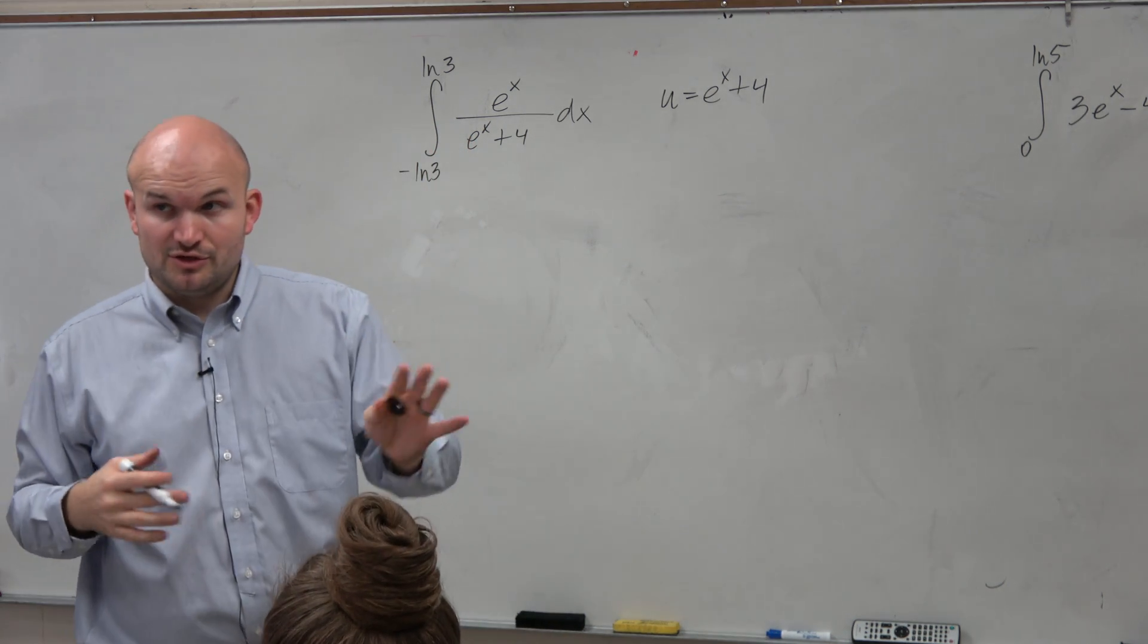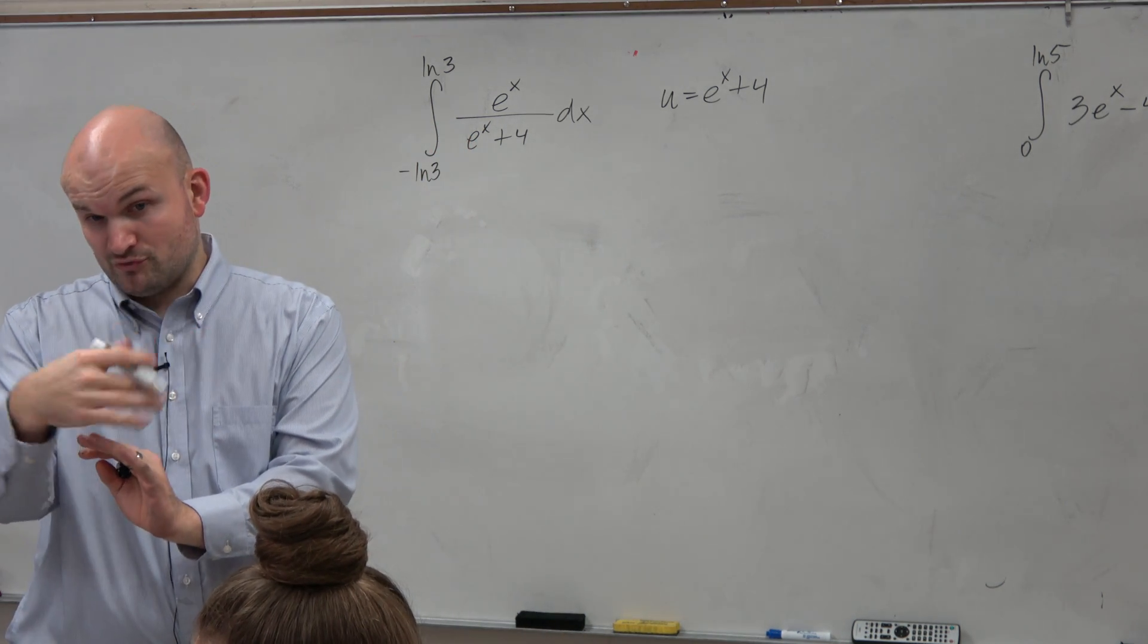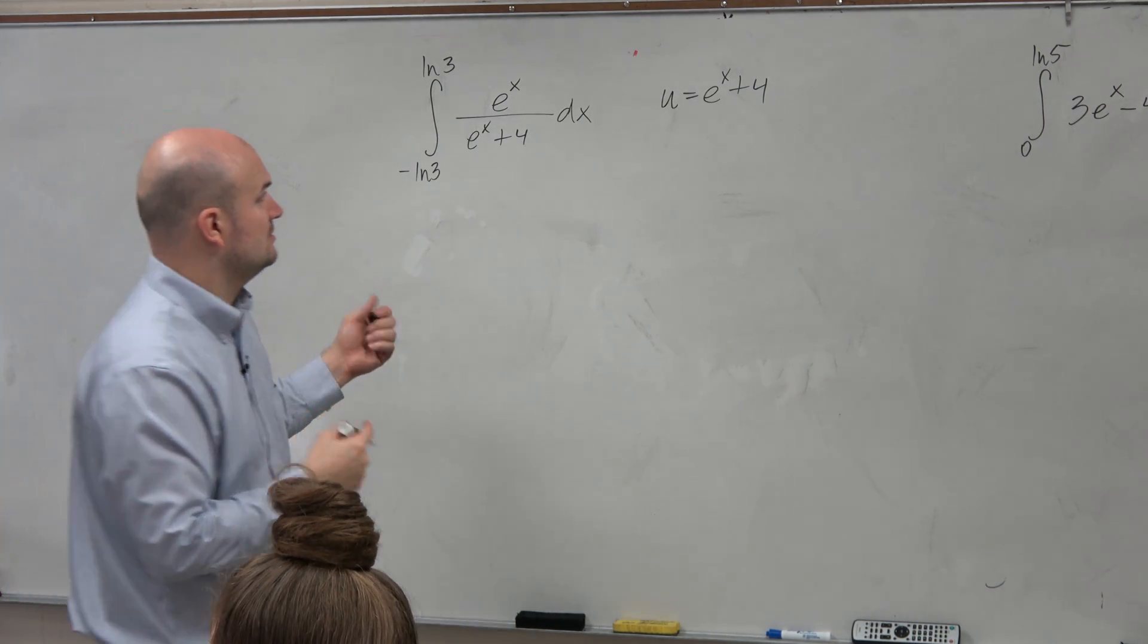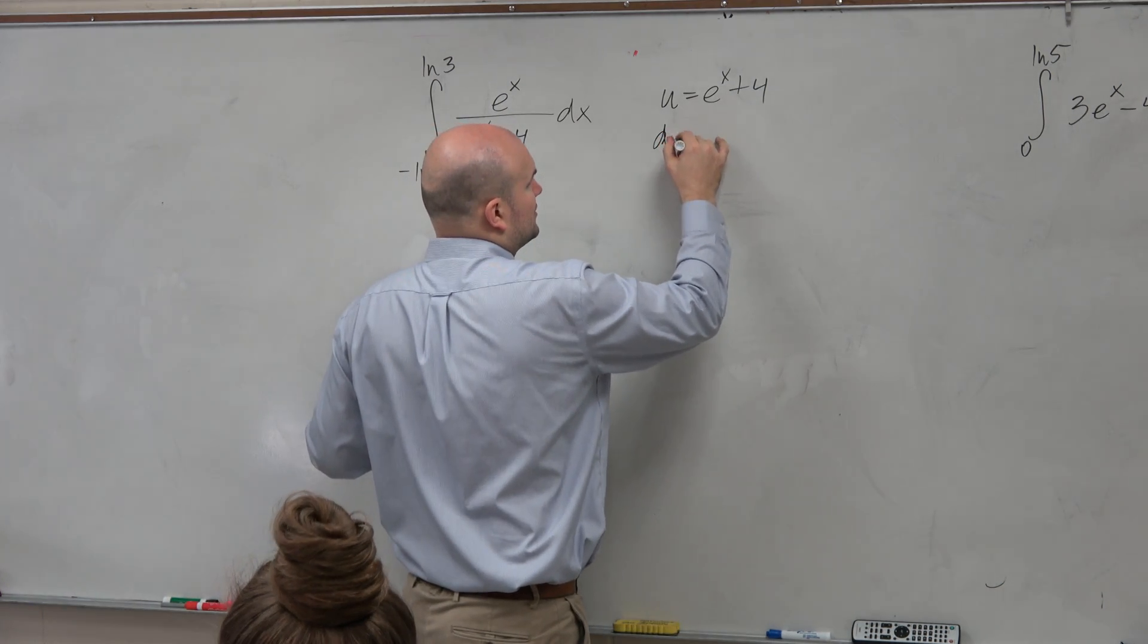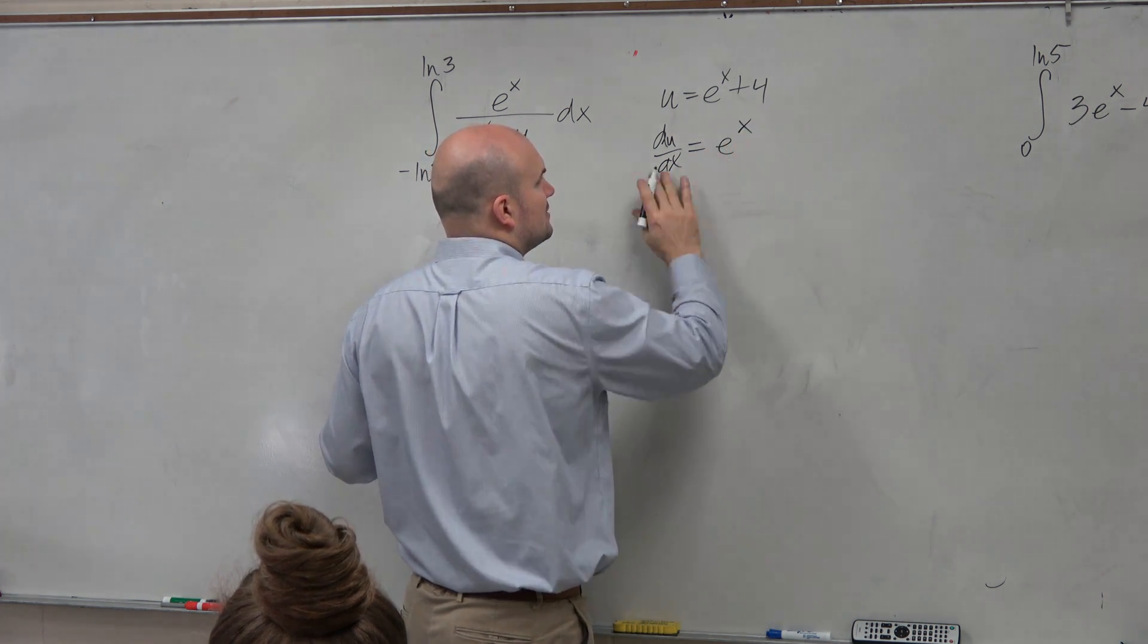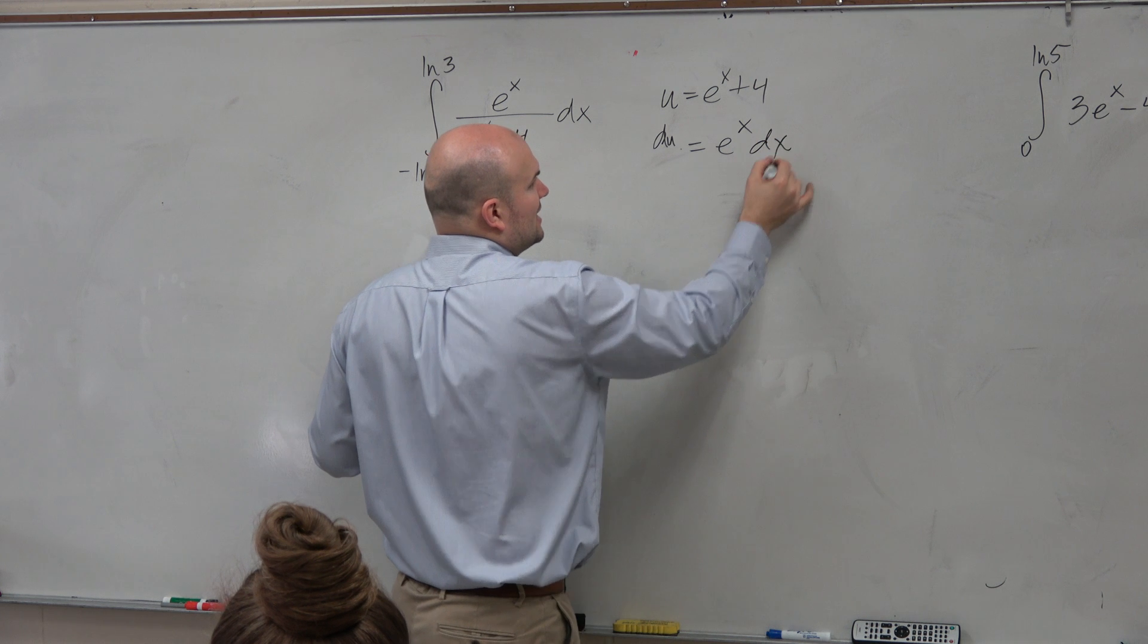Because what I notice is if u is going to equal the denominator, and I take the derivative of that, I get the numerator, which is e to the x. So if I do du with respect to dx, I'm going to get e to the x. And therefore, I can multiply the e to the dx on both sides.